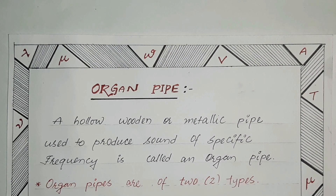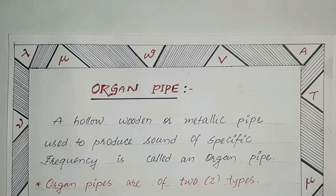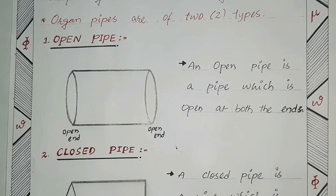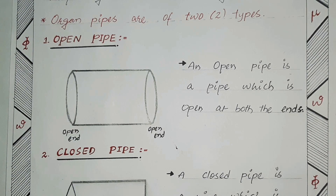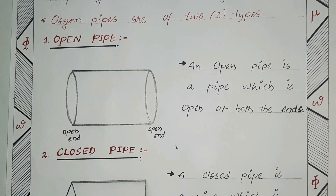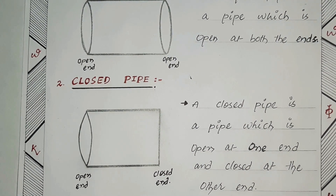These organ pipes are air columns which allow air to vibrate inside and to produce sound of a particular frequency. Generally, there are two types of organ pipes. The first is the open pipe and the second is the closed pipe. An open pipe is a pipe which is open at both ends, and a closed pipe is a pipe which is open at the first end and closed at the other end.